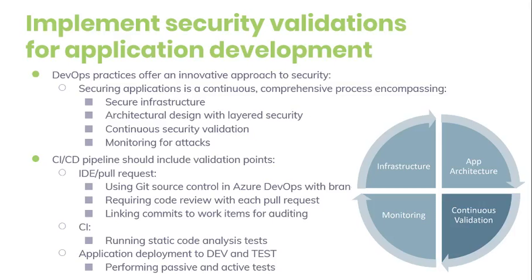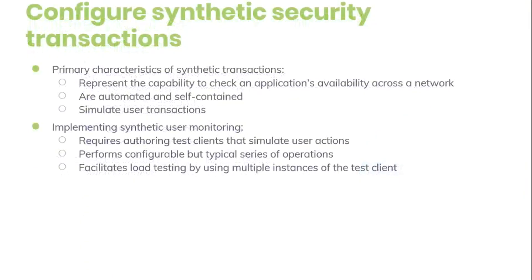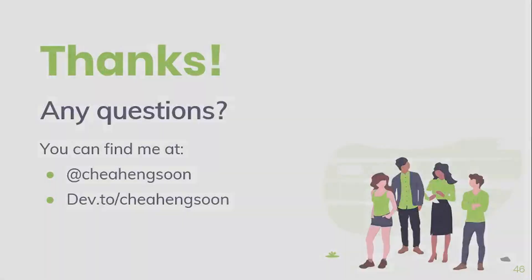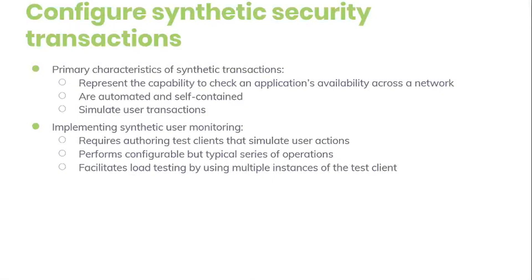Even with continuous security validation running against every change, malicious hackers are continuously changing their approach and new vulnerabilities are being discovered. Good monitoring tools help you detect and remediate issues discovered while your application is running in production. Azure provides a number of tools that provide detection, prevention, and alerting. Azure is also adopting top-10 mode security, and is now even using machine learning to detect anomalies and unusual behavior to help identify attackers.